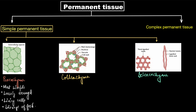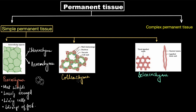Parenchymatous cells found in the leaf perform the function of photosynthesis because they have chlorophyll in them. Because of the presence of chlorophyll, those parenchymatous cells are called chlorenchyma. In plants that float on water, parenchymatous cells are arranged in such a way that they create air pockets between them — like in the case of lotus — providing buoyancy and helping the plant to float. Such parenchymatous tissue is called aerenchyma.